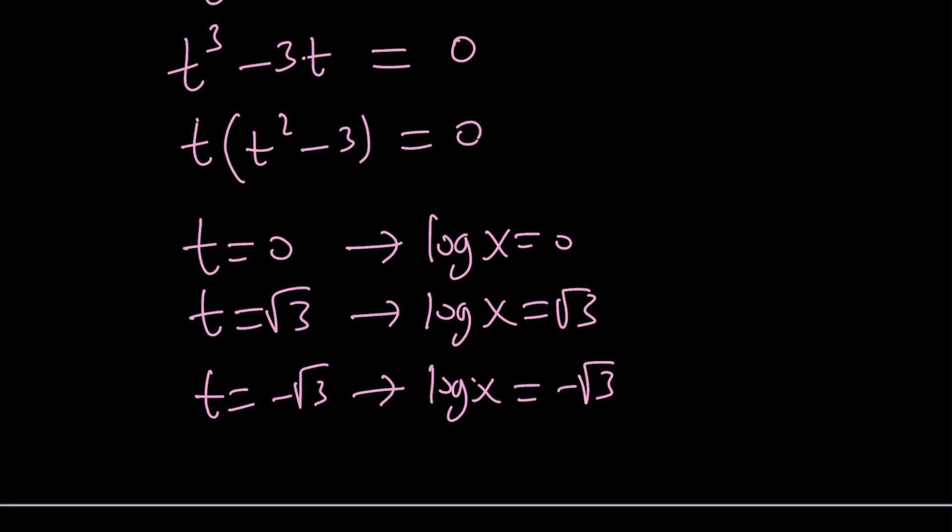Now, didn't we say that x needs to be positive? Yes, it doesn't violate that. We didn't say log x has to be positive because that's a different story. Obviously, if x is less than 1, between 0 and 1, I should say, then log x is going to be negative. That's what's happening here. So all these solutions are valid, good. They satisfy the original.